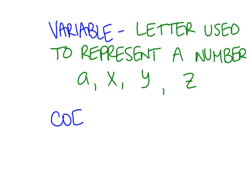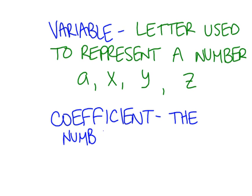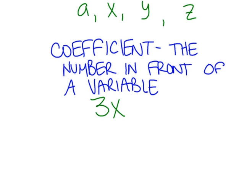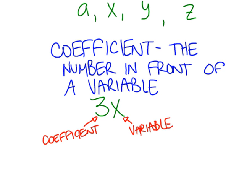Another word is coefficient. The coefficient is the number in front of a variable. So when we saw something like 3x, the 3 would be the coefficient and the x would still be the variable. Hopefully you remember that the operation in between the two would be multiply — we don't write the multiplication, but if you have a coefficient in front of a variable it means multiply.